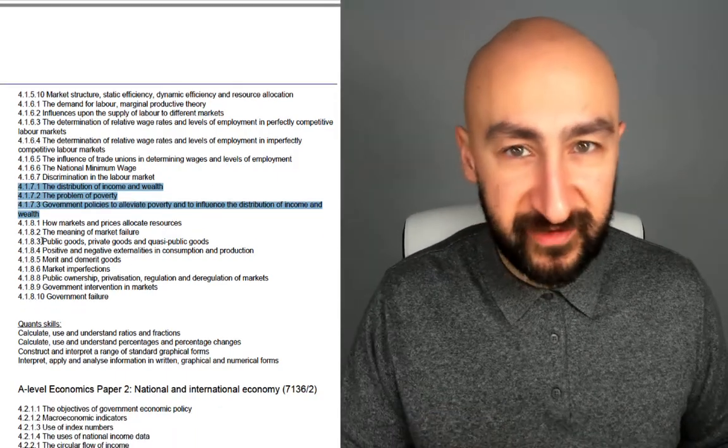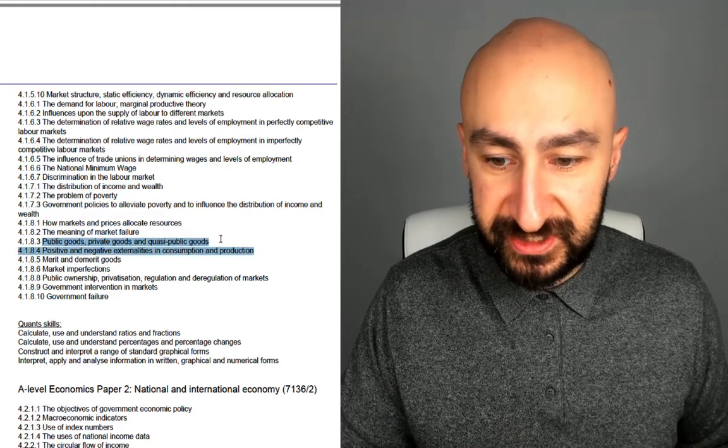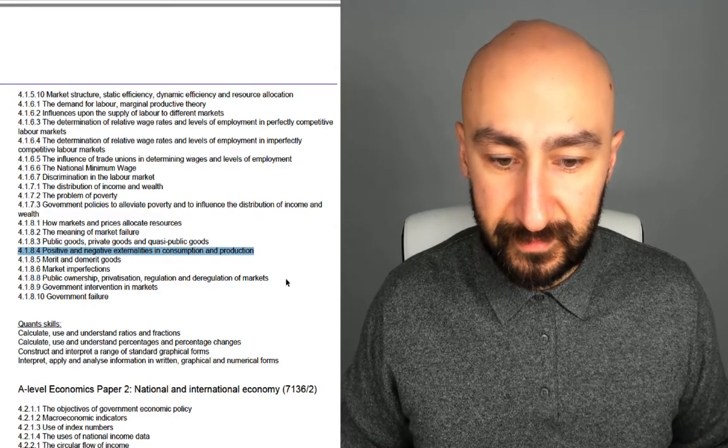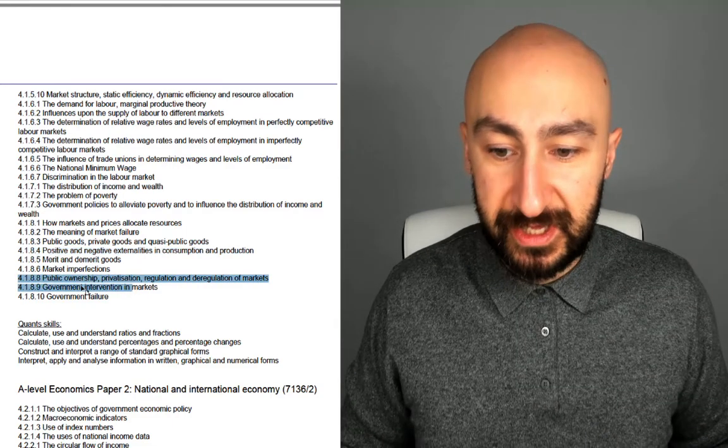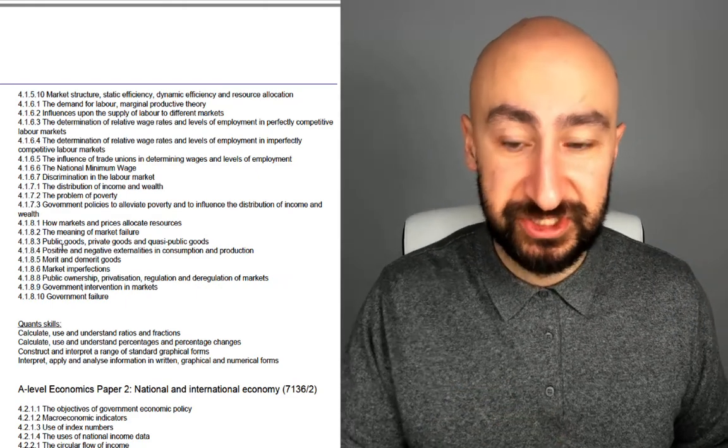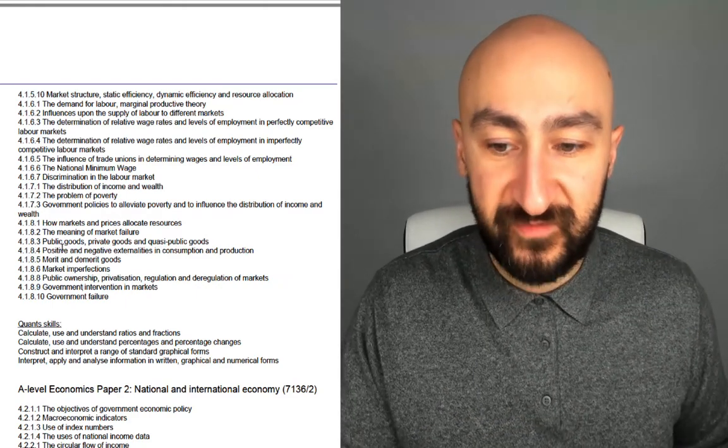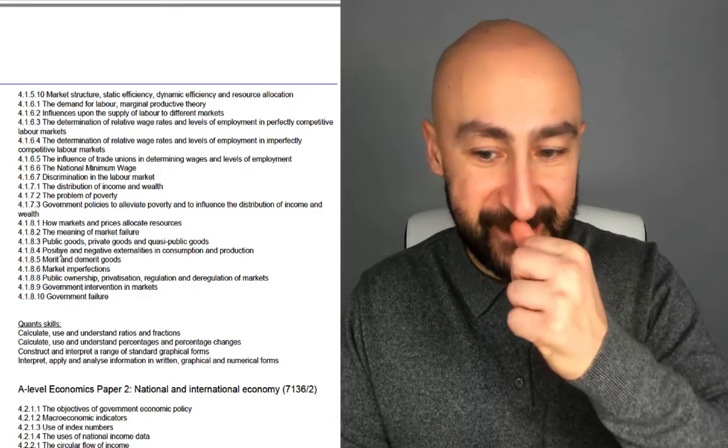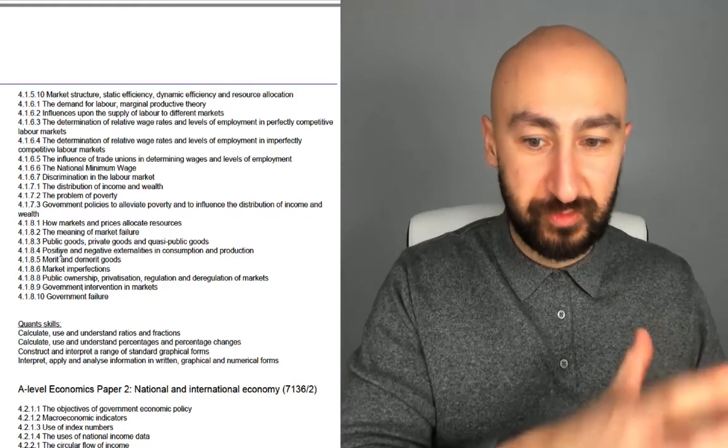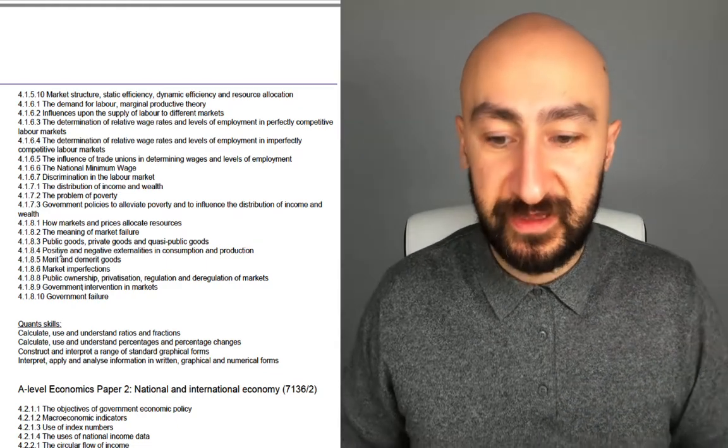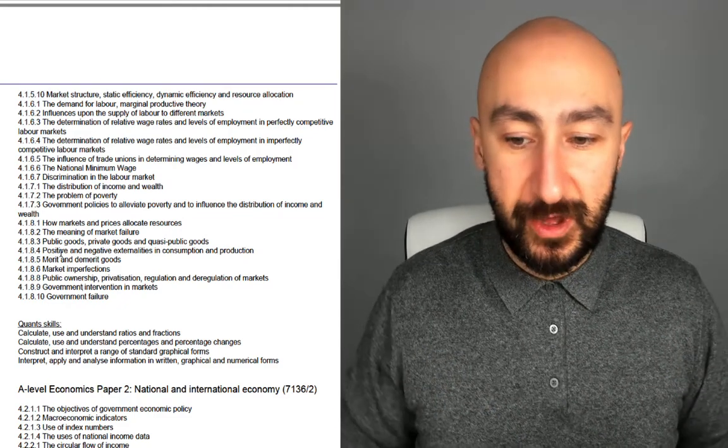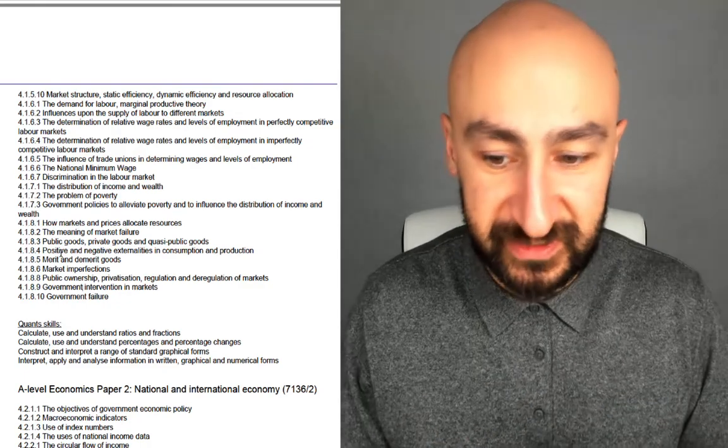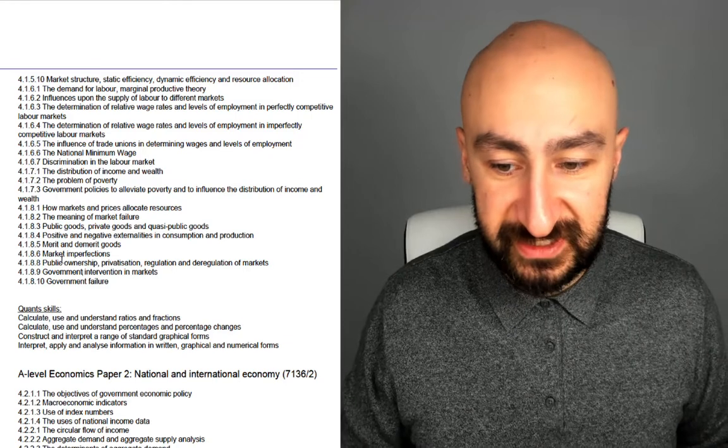Market failure, what market failure is gonna come up? Public goods, private goods, externalities, merit and demerit goods. And then the government interventions. So potentially there's gonna be a big question or a case study again on government intervention on externalities and public goods. So maybe there's gonna be a scenario where there's gonna be a big question on the government's intervening, on providing the solution for those negative externalities or public goods, for example. And the government failure associated with that.